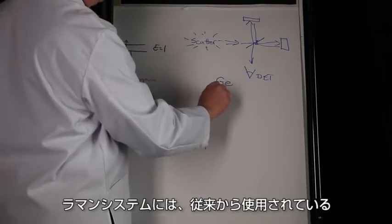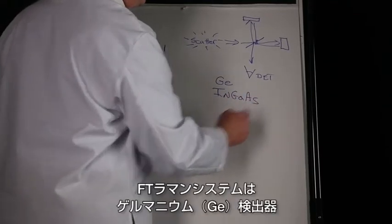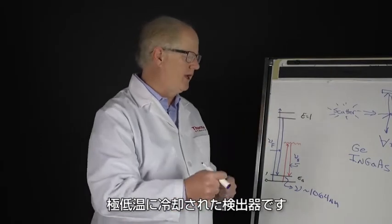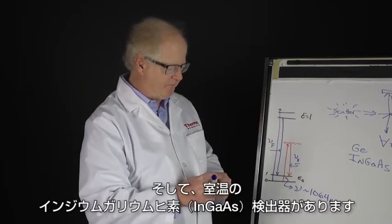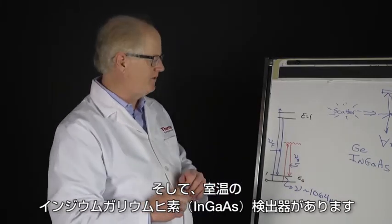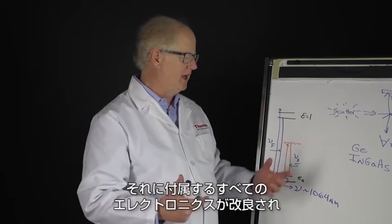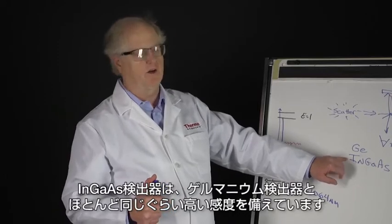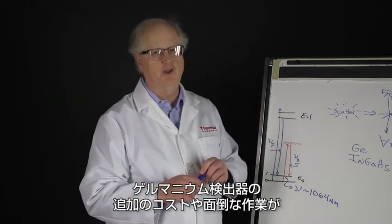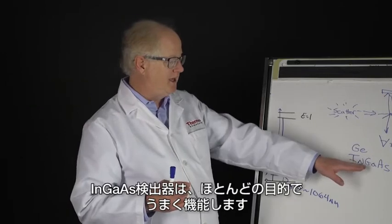The two detectors that have been used traditionally for FT Raman systems are germanium detector with a cryogenically cool detector and the room temperature indium gallium arsenide detector. With the improvement in the preamps and electronics, the InGaAs detector is almost as sensitive as the germanium. There are very few samples for which you need the germanium detector's extra cost and complexity. The InGaAs works just fine for most purposes.